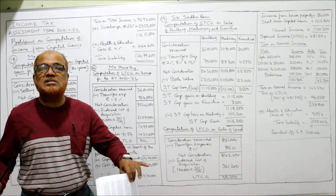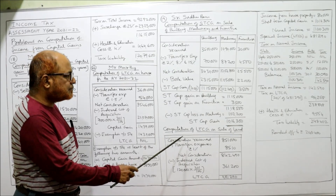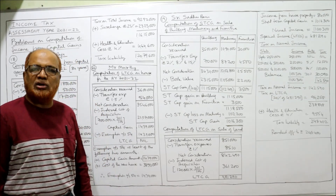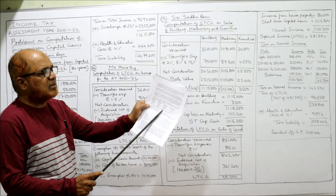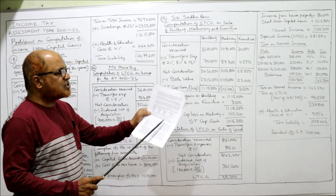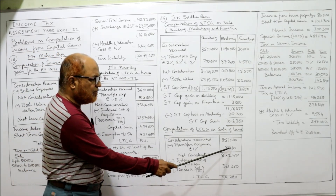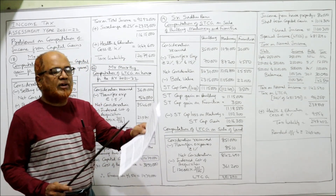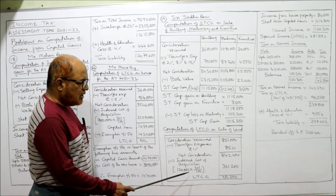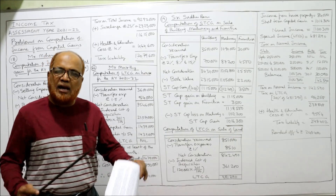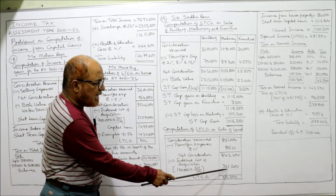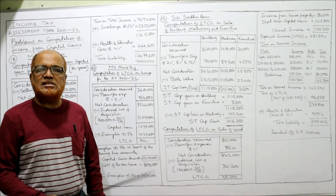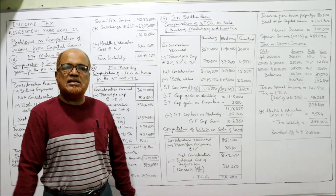Short-term capital gain is taxed on the slab system along with other incomes. Now computation of long-term capital gain on sale of land — land is a non-depreciable asset. Consideration received: 8 lakh 51 thousand. Less transfer expenses at 1%: 8 thousand 510. Net consideration. Less indexed cost of acquisition: book value is 1 lakh 20 thousand, multiplied by 301 (current year index) divided by 100 (purchase year index) = 3 lakh 61 thousand 200. Deduct to get LTCG of 4 lakh 81 thousand 290.